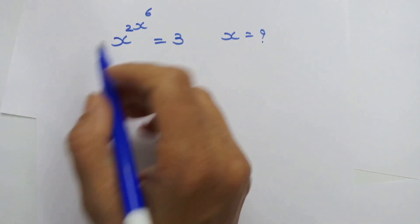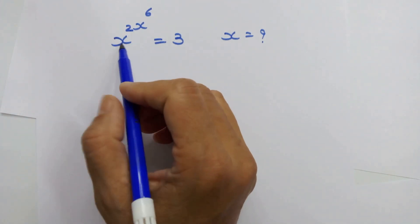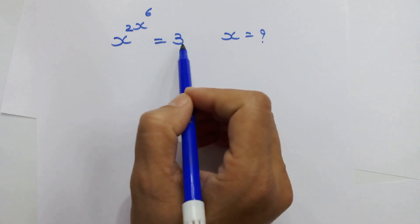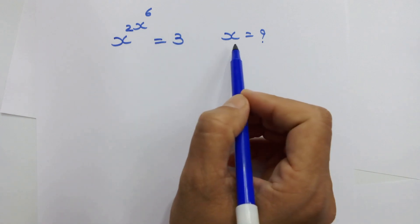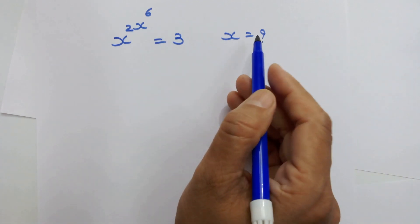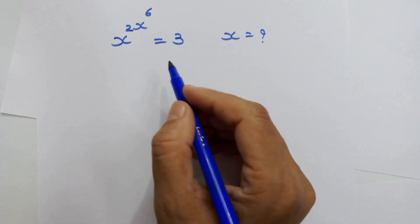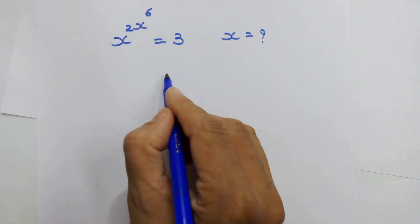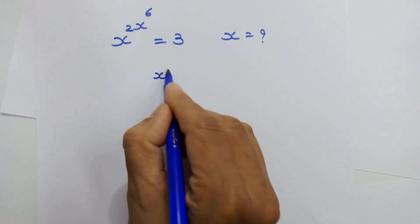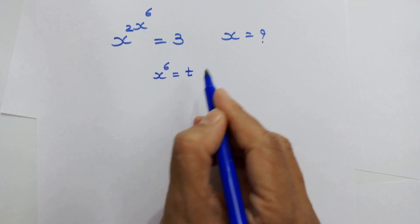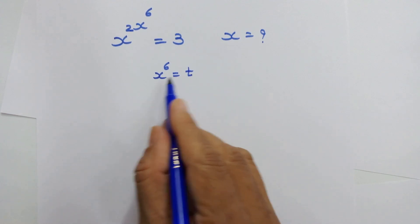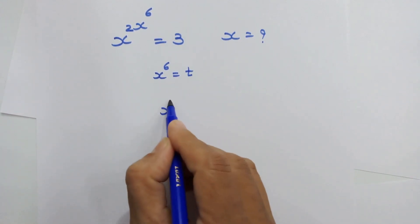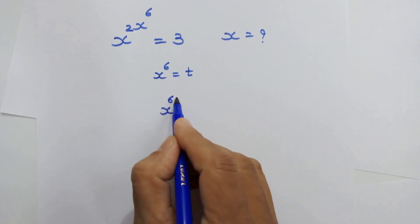Hello friends. Here we have x raised to 2x raised to 6 is equal to 3, and we have to find out the value of x. What we are going to do is let x raised to 6 be equal to t. Now let's raise 1 upon 6 on both sides.